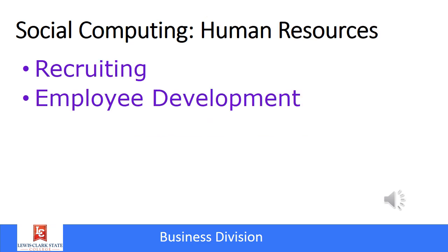Social computing also helps the human resources department. A couple of ways include recruiting — both recruiters and job seekers are moving to online social networks like Indeed, CareerBuilder, and even Craigslist to look for ads. And then employee development: HR professionals use social tools to encourage and promote employee development by building relationships, including e-training, e-learning, and wikis where employees can share information and help new employees get trained and feel like they're part of the group.